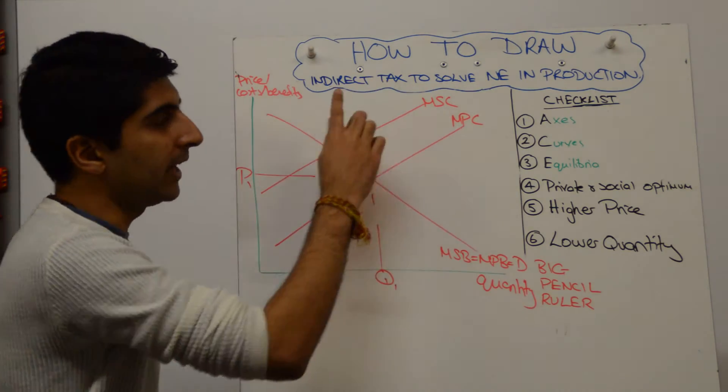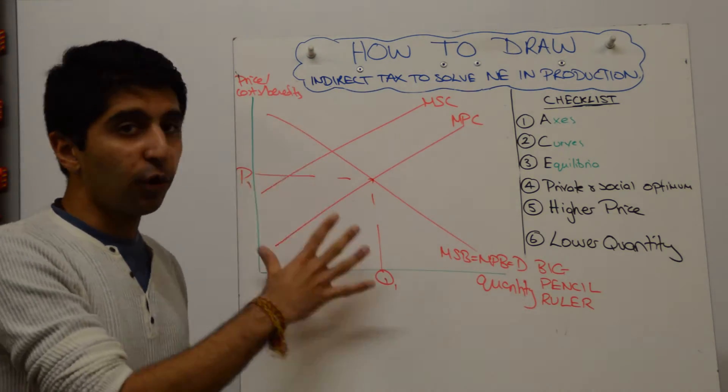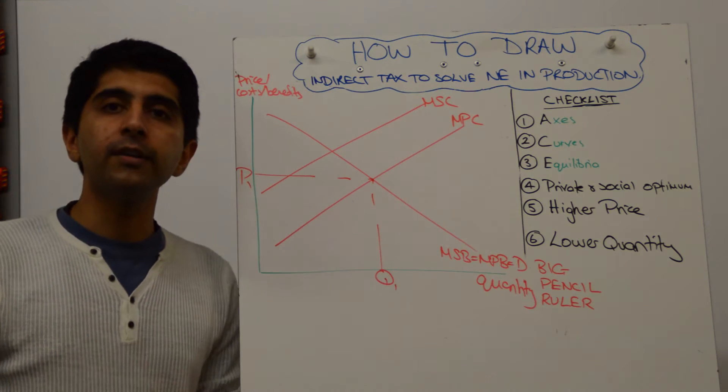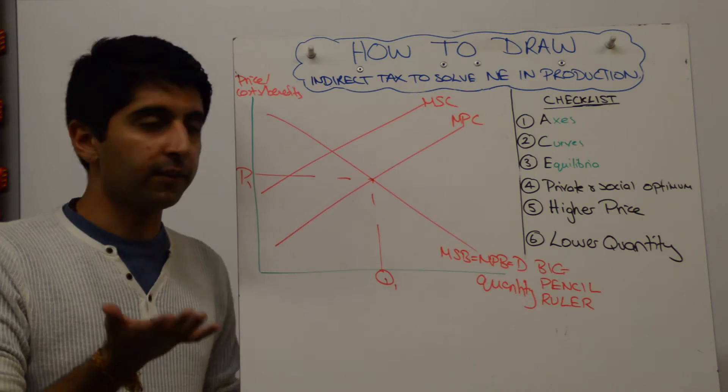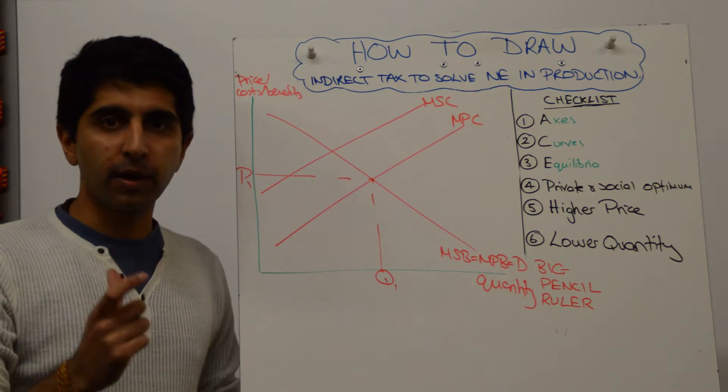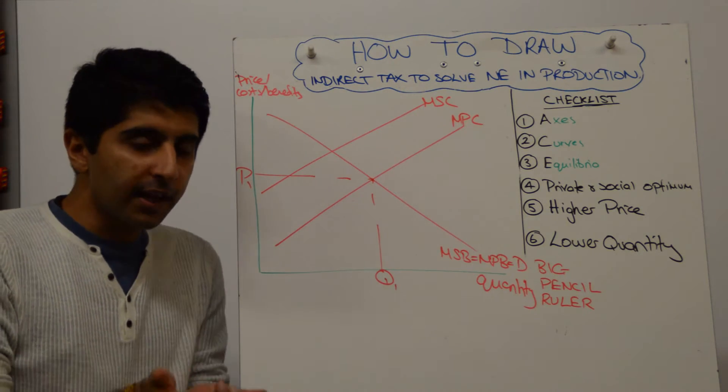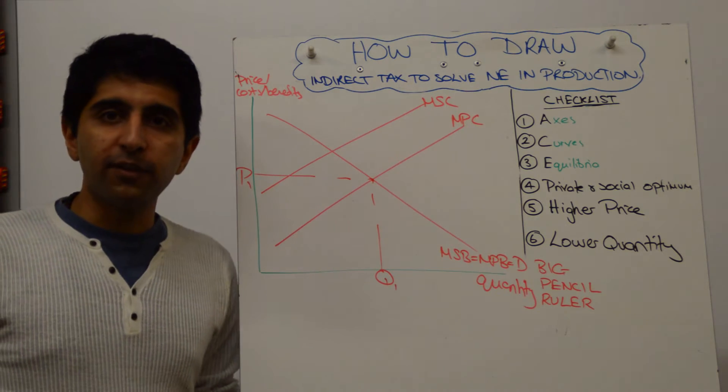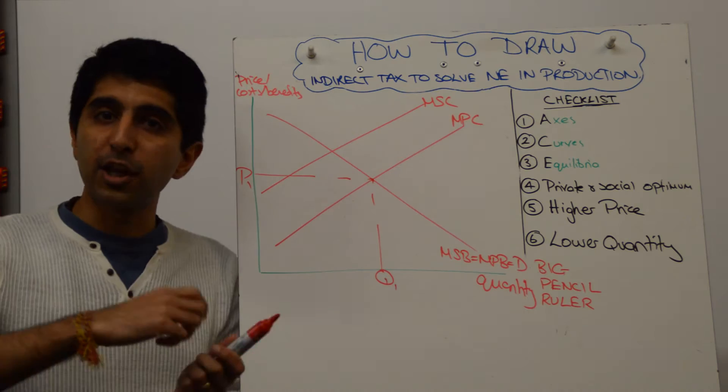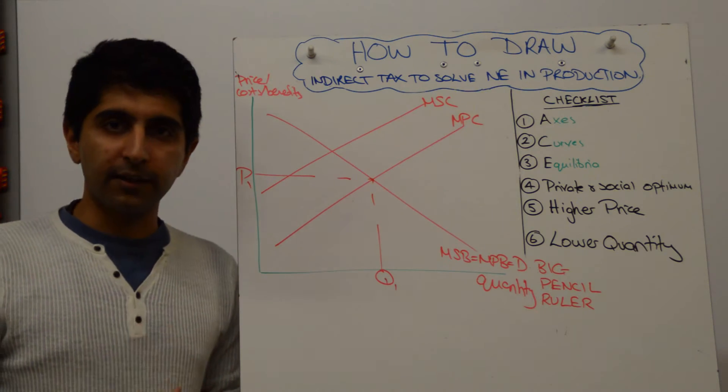Now you've got to think, it's an indirect tax to solve this given problem. What does an indirect tax do? It shifts the supply curve upwards, and the supply curve is our marginal private cost curve. So an indirect tax here will shift that curve upwards, and I'm going to make the assumption in this video that the tax is perfect. It internalises the negative externality perfectly.